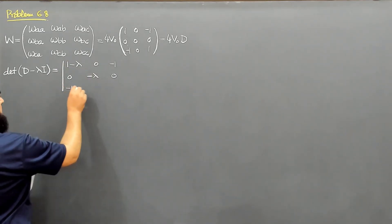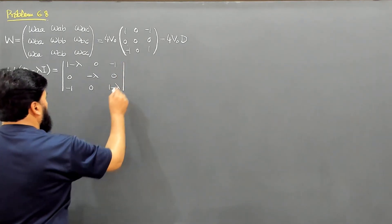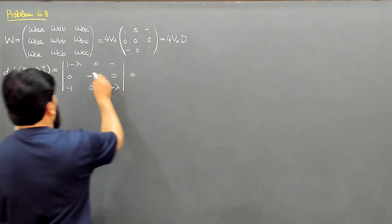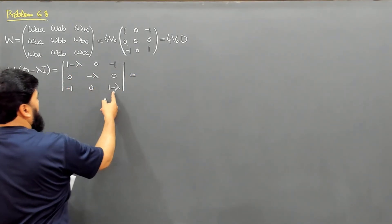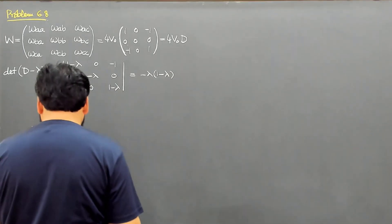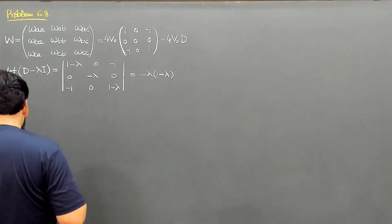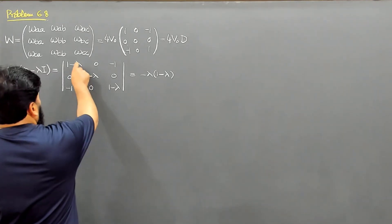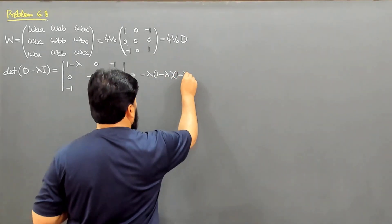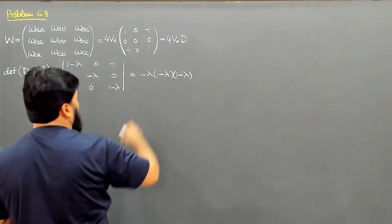Similarly, this element is minus 1, this 0, and this one is 1 minus lambda. The determinant is now complete. Selecting the appropriate terms: minus lambda into 1 minus lambda, this is one value. Then lambda into 1 minus lambda, and further into this 1 minus lambda. So 1 minus lambda into 1 minus lambda, minus 0, gives 0 here.